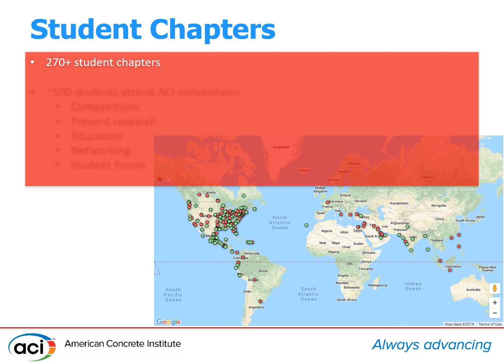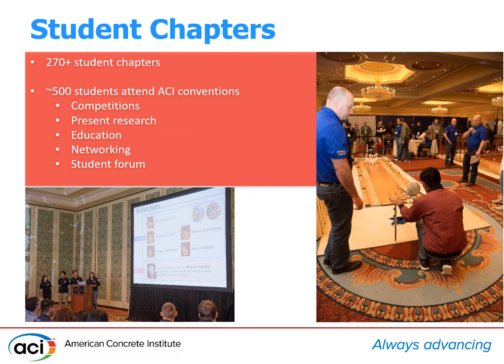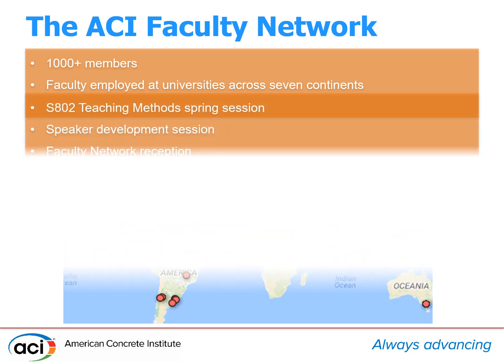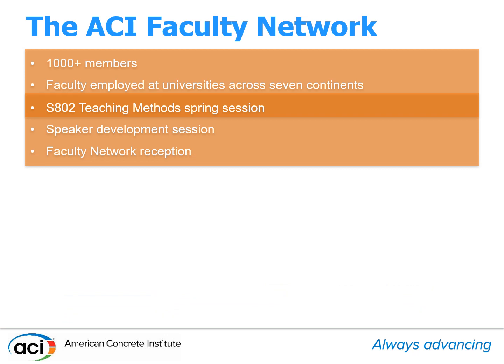ACI currently has over 270 student chapters represented by the green dots on the map. Approximately 500 students attend ACI convention for various purposes. Faculty Network members include over 1,000 professors from around the world. The network provides a resource for collaboration or for sharing information about teaching practices and research, and is ACI's main way of contacting professors.